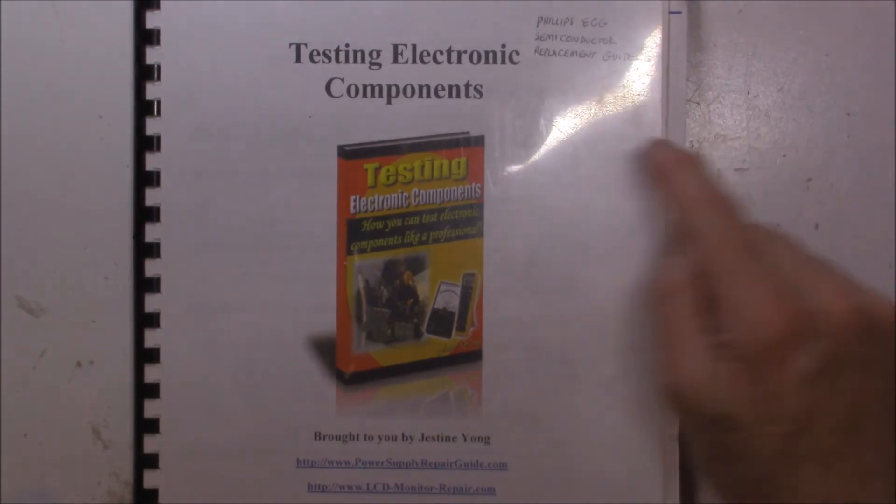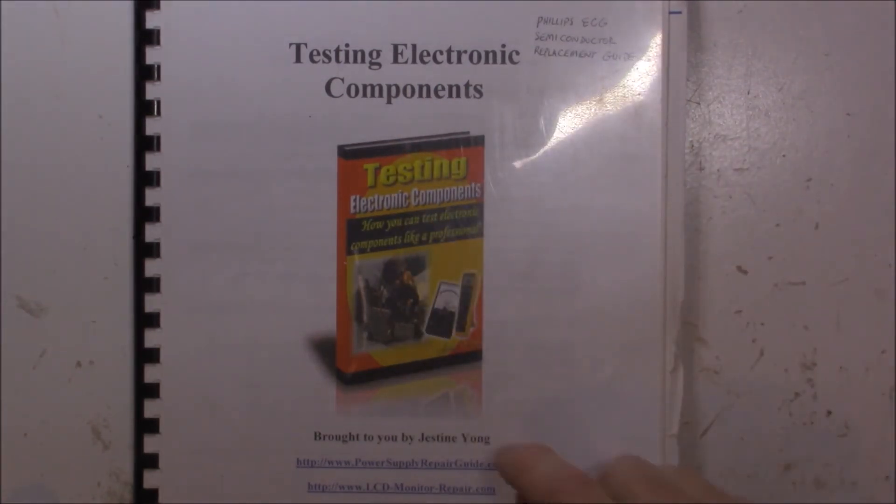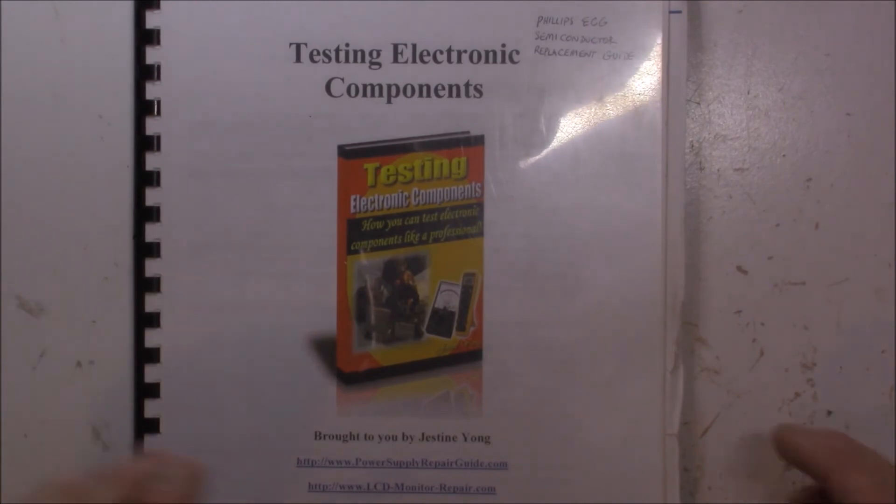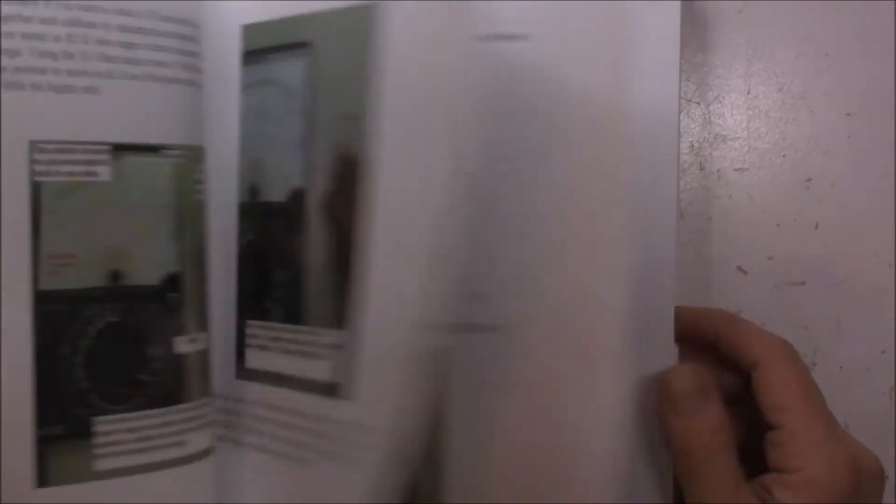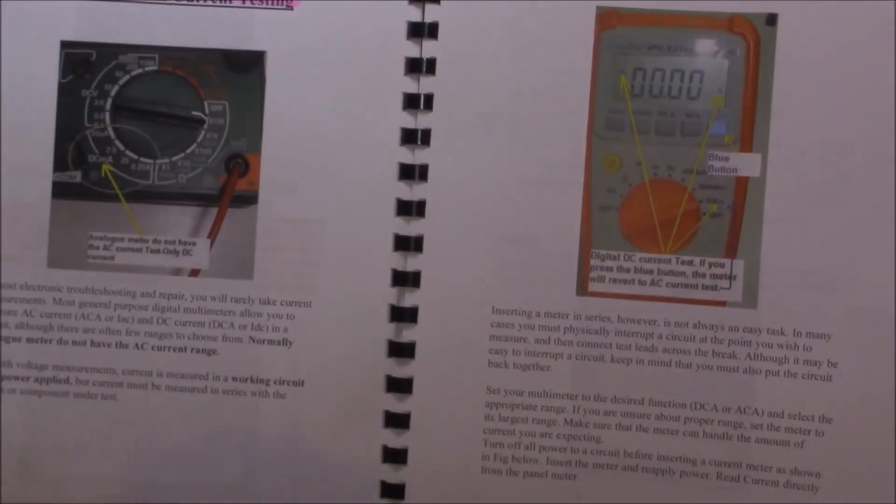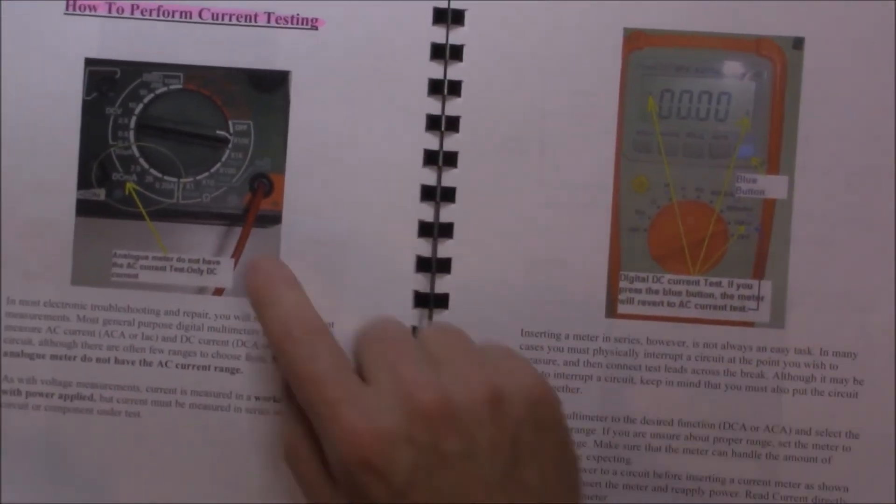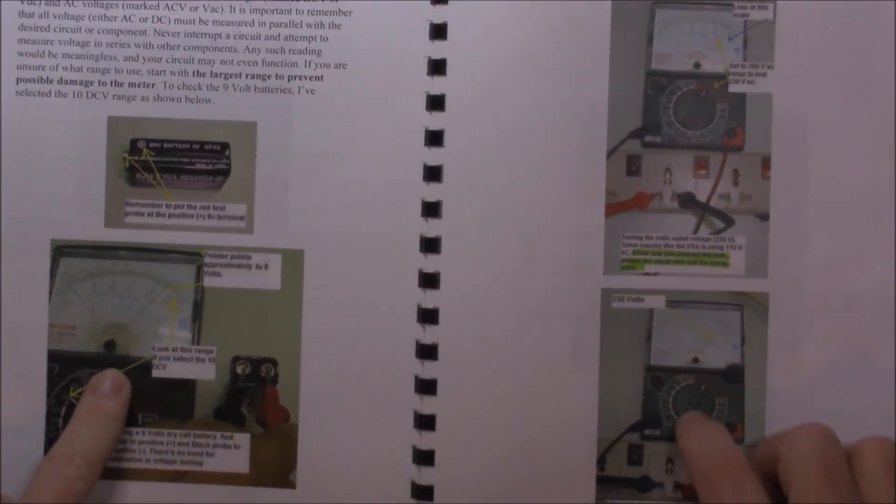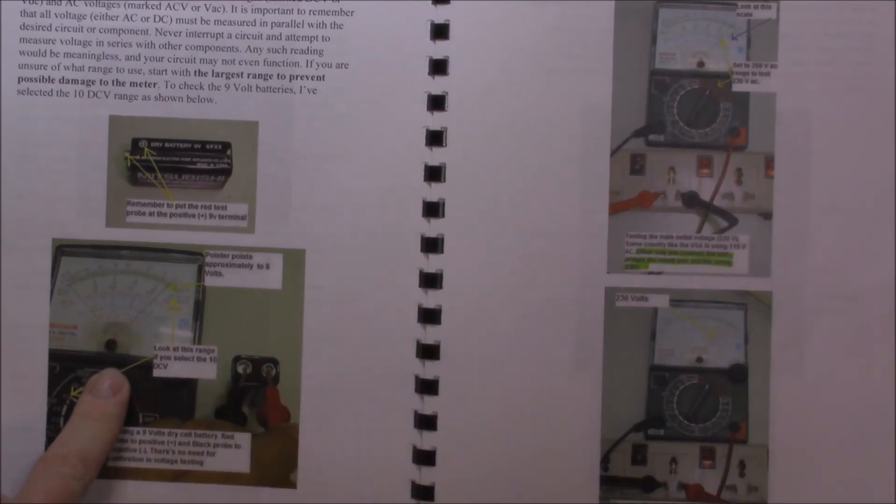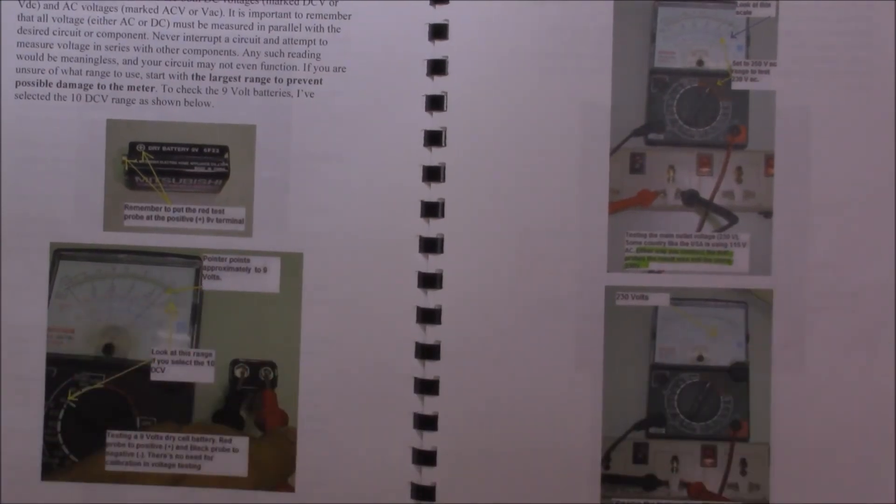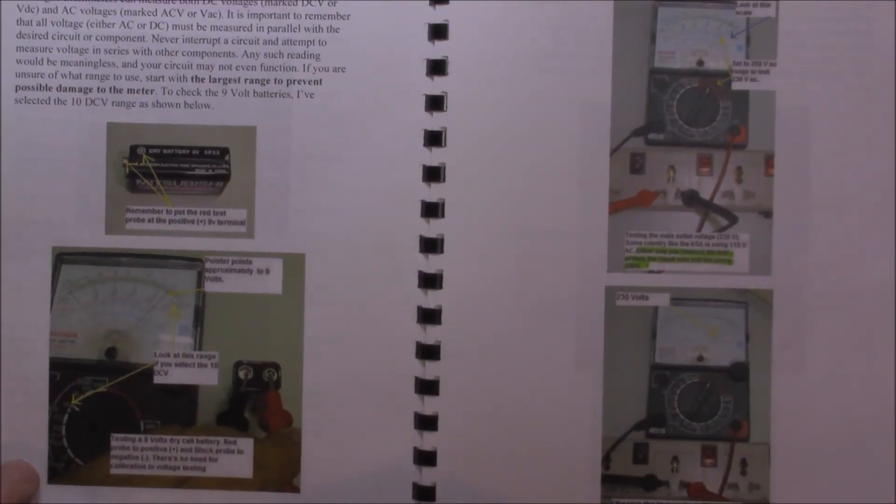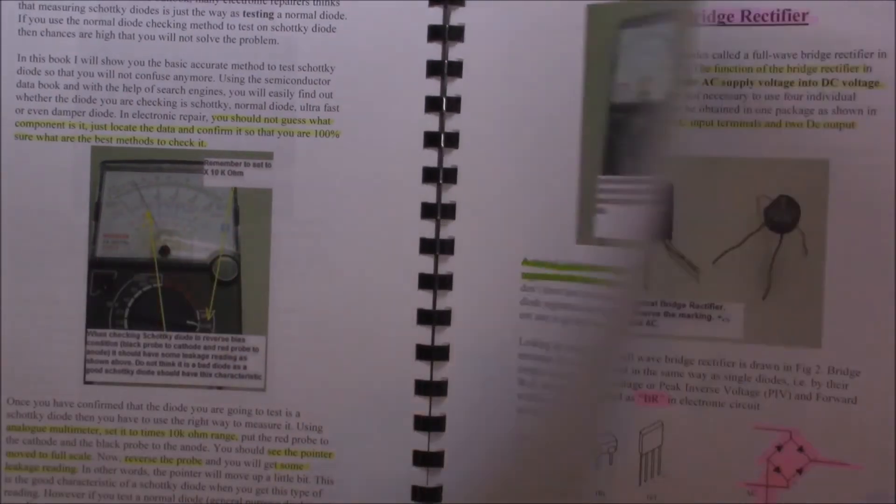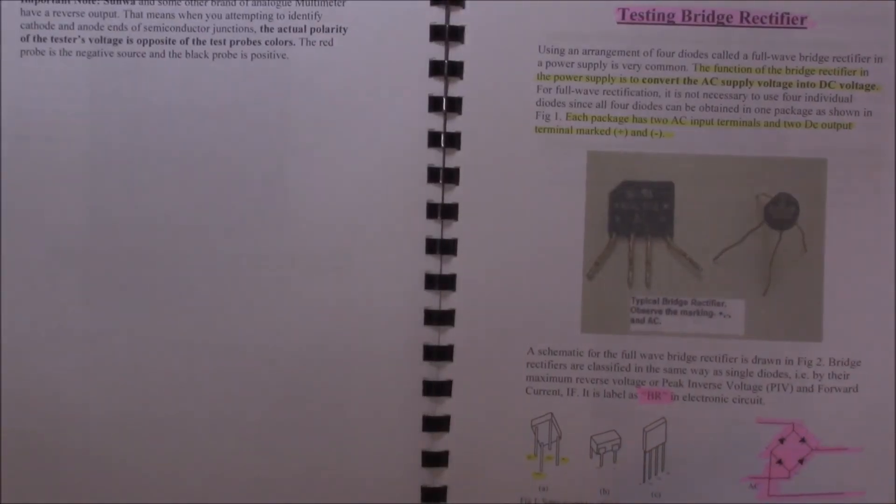If you get a chance, get yourself this book, Testing Electronic Components by Justine Yong. This is what got me into electronics in the beginning, reading and studying this book. And of course, you know me. I study absolutely everything. But, if you have a look through here, you can see that generally speaking, an analog meter has been used. In most cases, you'll find measurements done with an analog meter. And Justine does a fantastic job of explaining it to you. All the way through the book, you'll find information with regard to the use of an analog meter.